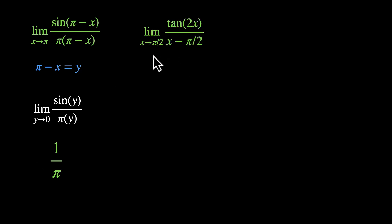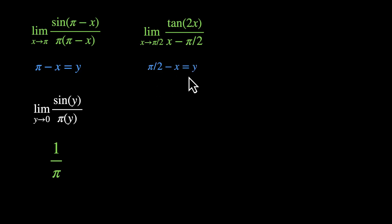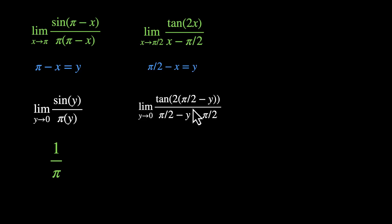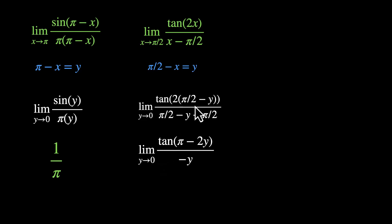Next: limit x approaches π/2, tan(2x) / (x - π/2). In the case of tan and sin, the angle is approaching 0. X is approaching π/2, so x - π/2 or π/2 - x is approaching 0. Let's take π/2 - x as a new variable y. This makes x = π/2 - y. Substituting: limit y approaches 0, tan(2 times (π/2 - y)) in the numerator, which is tan(π - 2y); denominator becomes π/2 - y - π/2, so -y. We have tan(π - 2y) / (-y).